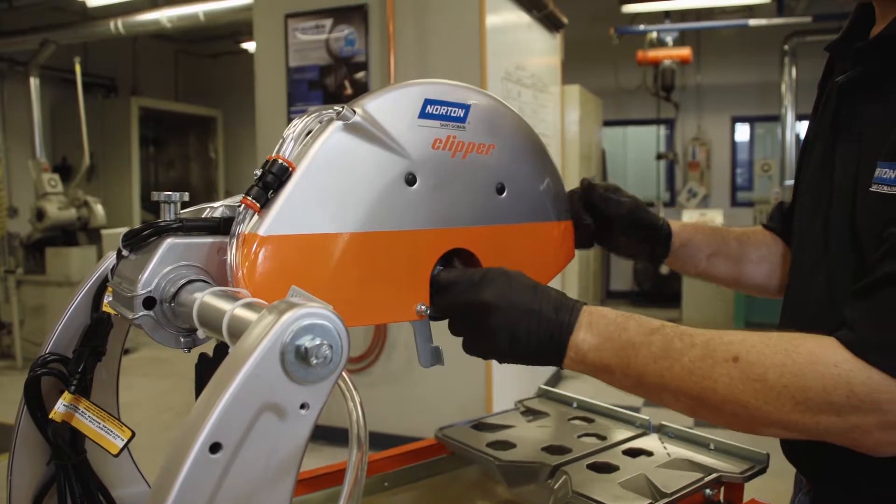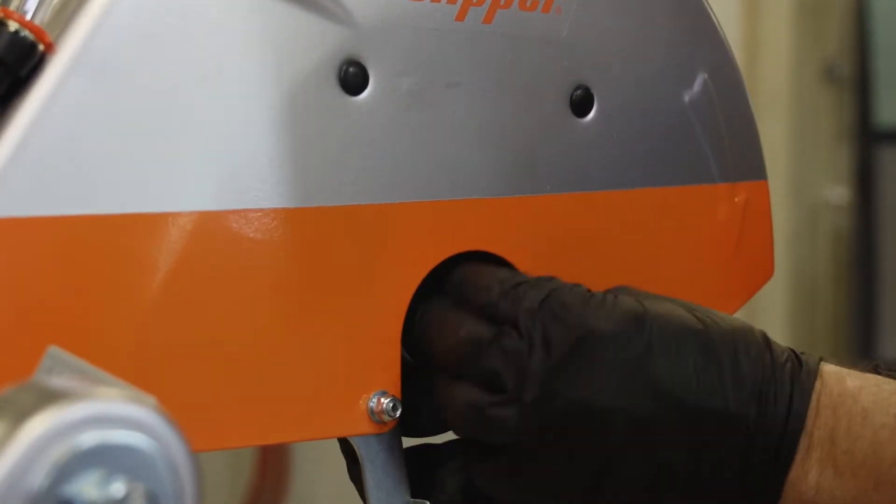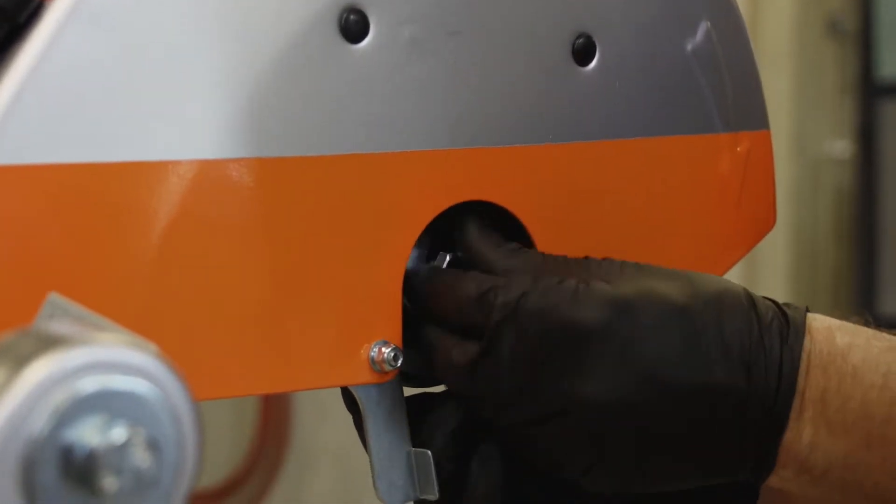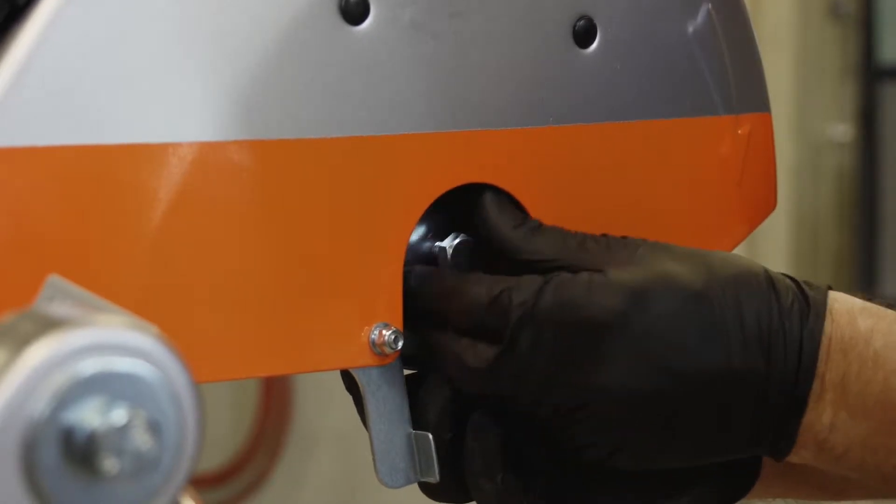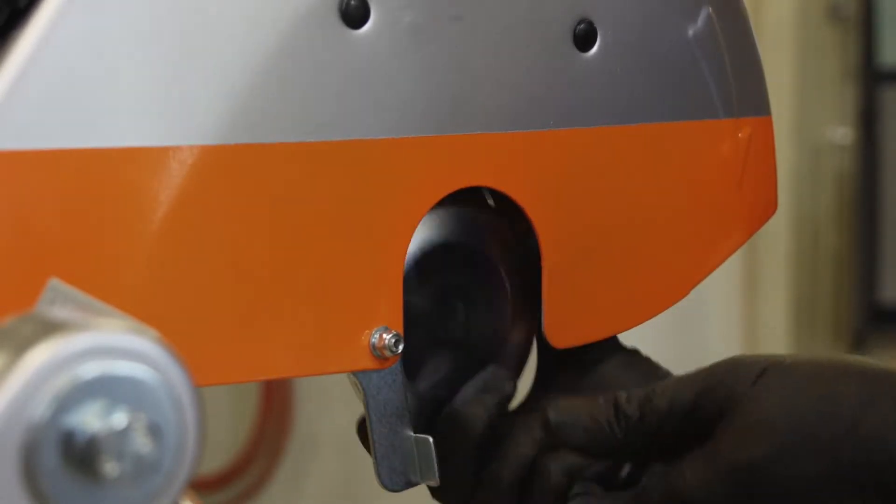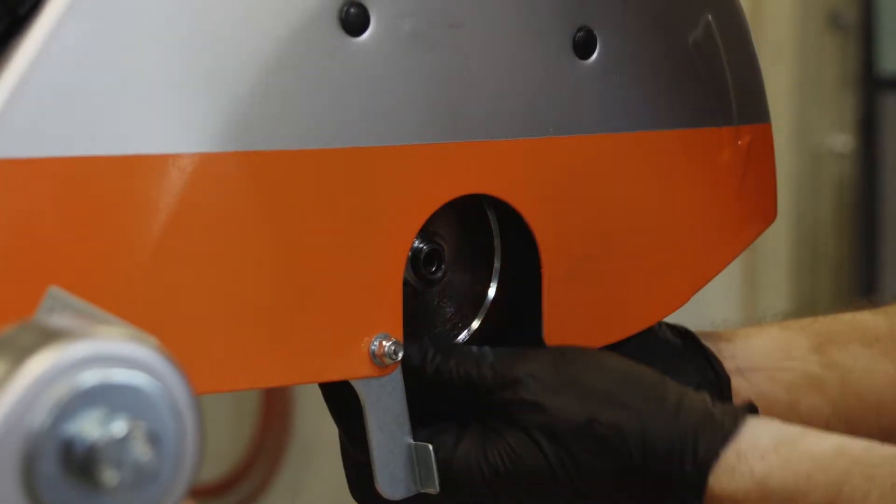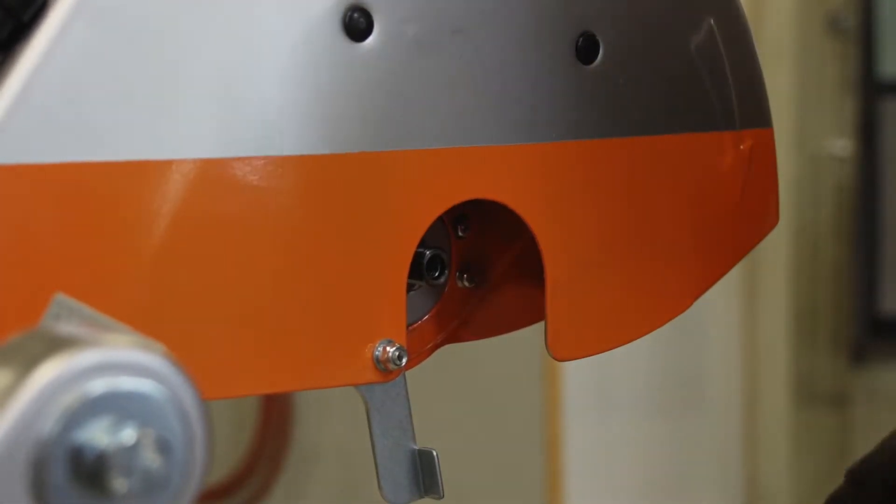Open the blade vent cover. Remove the blade shaft retaining bolt. Outer collar, remove it. Inner collar, remove.